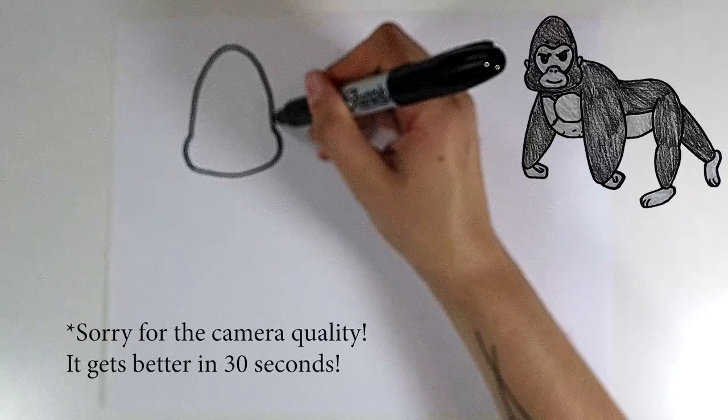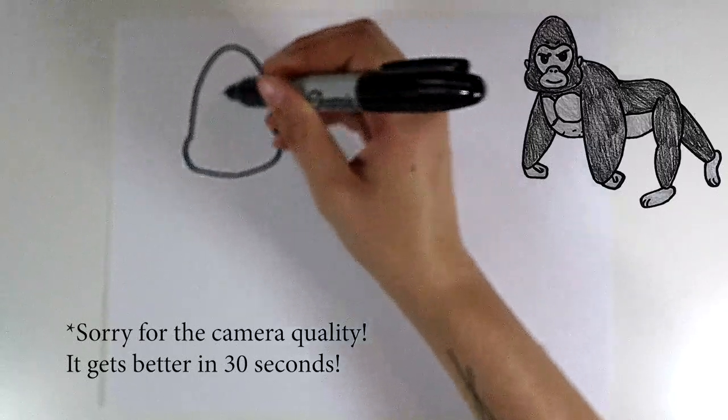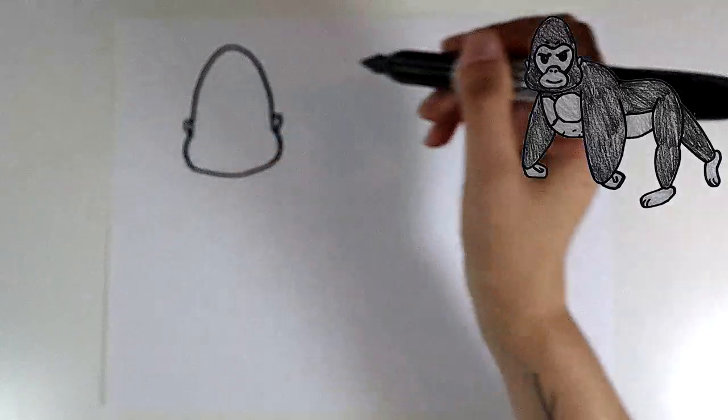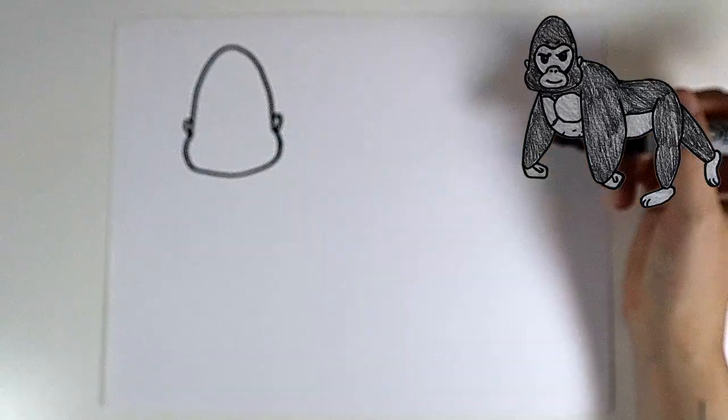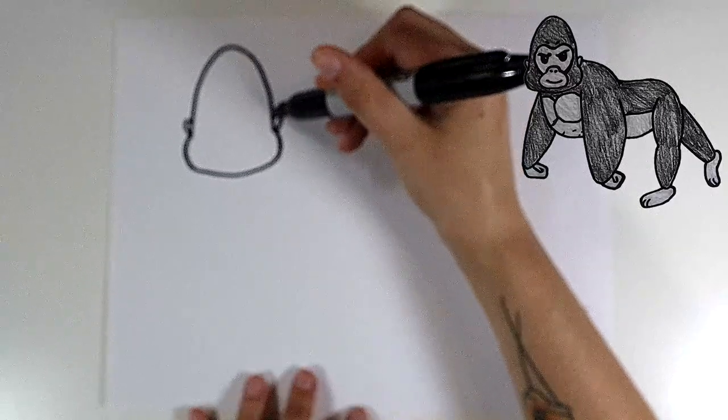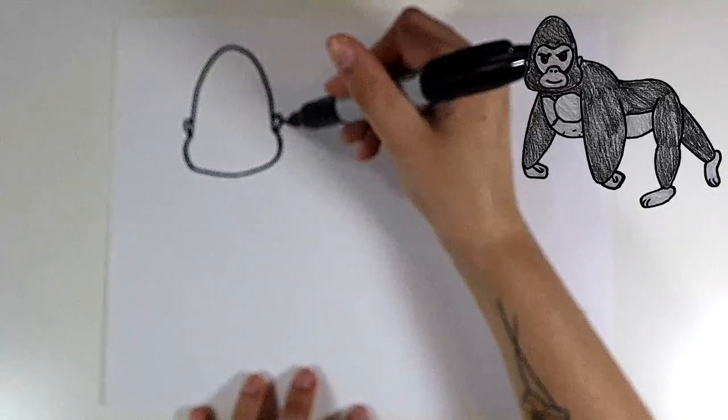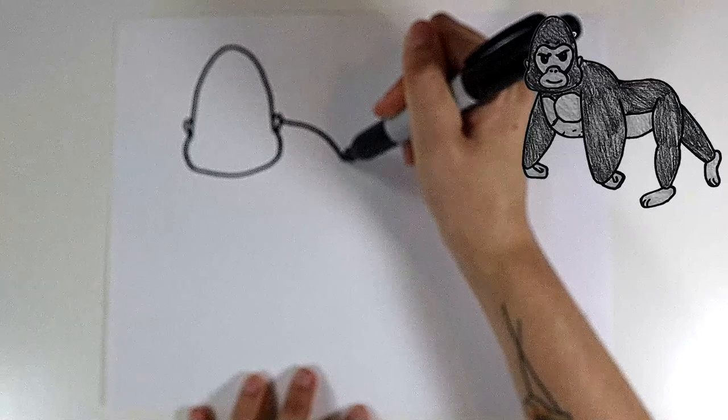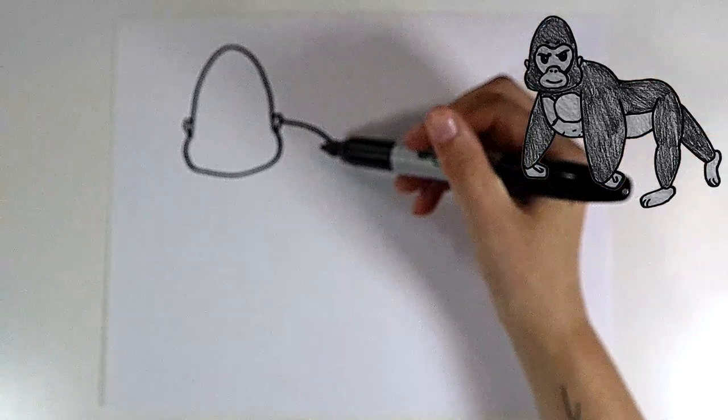Right here where these two curves connect, we're going to draw a curved line for an ear. So we'll do that on each side. And then we're going to start drawing the shapes for the body. I'm going to start right here. You're going to have a line that curves over. That's like the shoulder area.